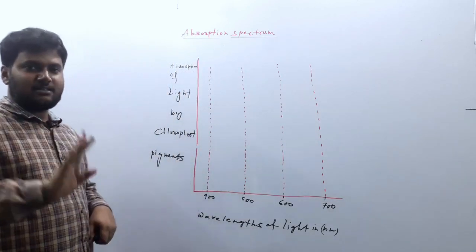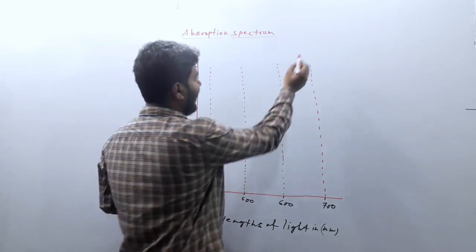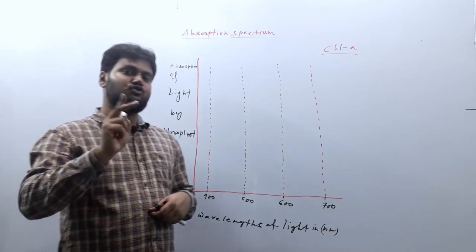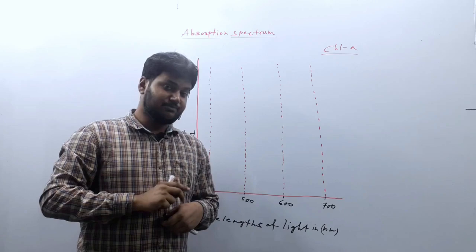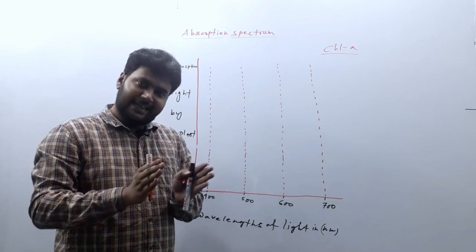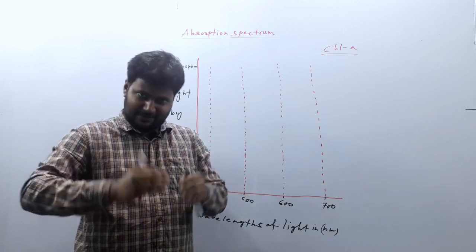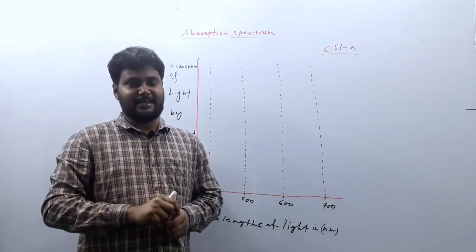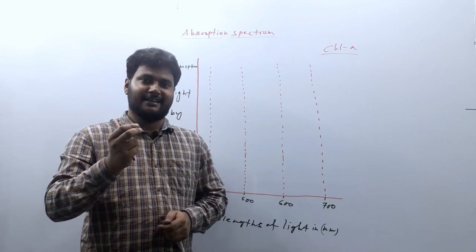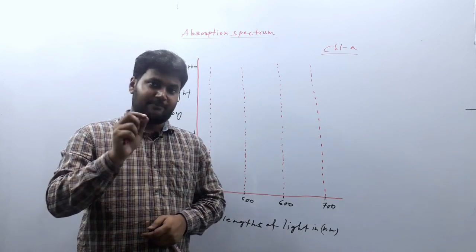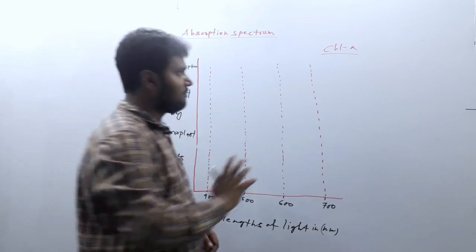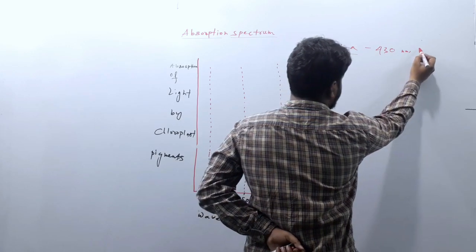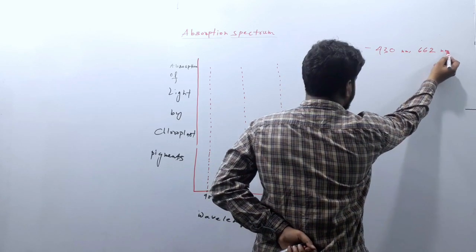First, we will discuss the absorption spectrum of chlorophyll A. We have to know that chlorophyll A has two absorption peaks. The absorption peak means chlorophyll A has a wider range of wavelengths which it absorbs — that is its absorption spectrum — but at some particular wavelengths it absorbs light maximum, which is called the absorption peak. Chlorophyll A has two absorption peaks: at 430 nanometer and 662 nanometer.